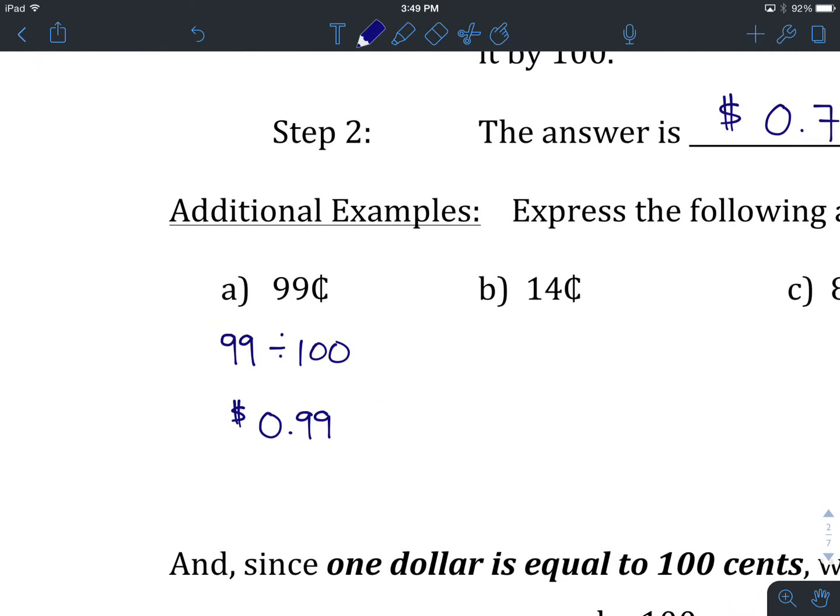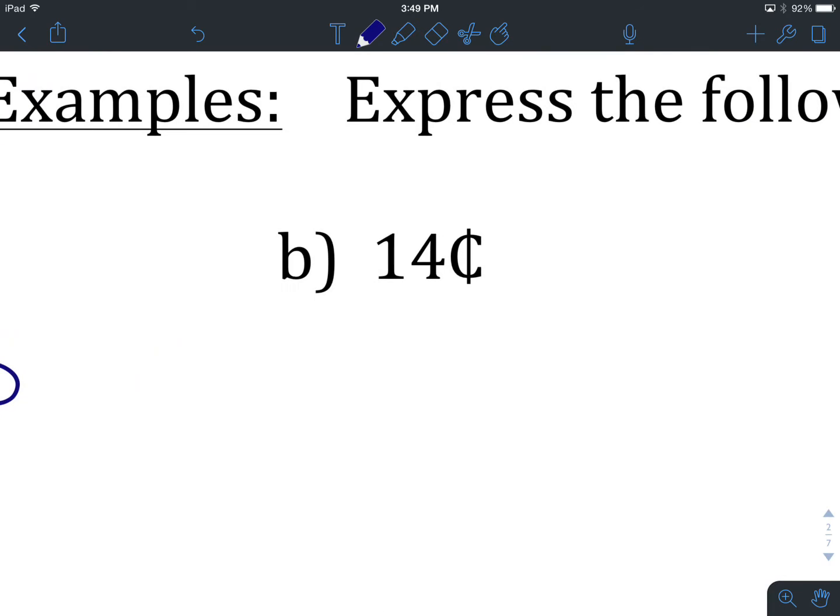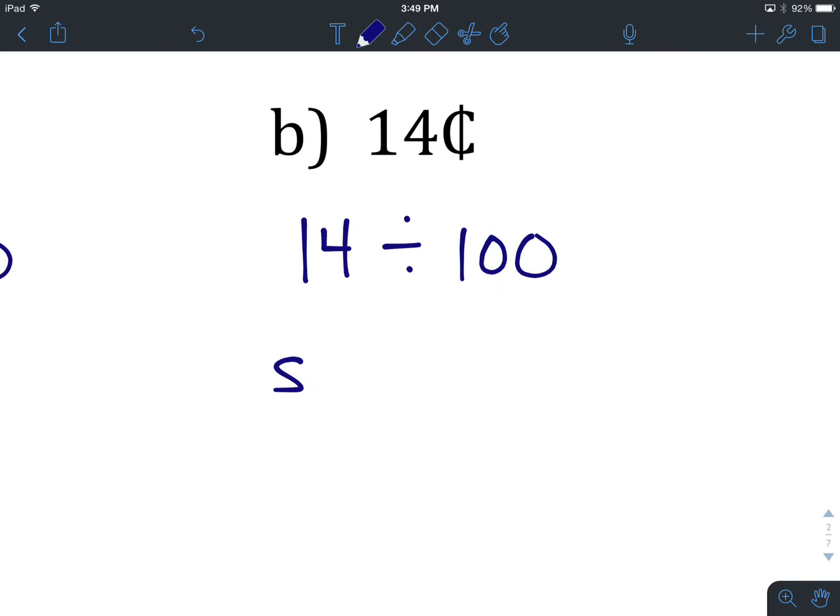These are the steps I'd like to see. Let's do B together, and then we'll let you try C on your own. We have 14 cents, and we want to express this in dollars. We start by taking the number of cents we've been given, which is 14. Moving from cents to dollars, we divide by 100. Our new notation is dollars, and our answer is $0.14.